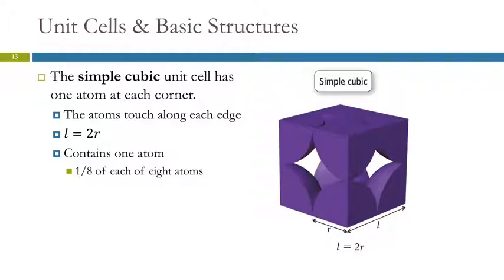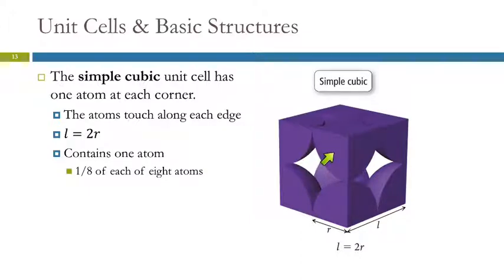The size of the unit cell depends on how big the atom is — a larger atom means a larger unit cell. The other thing we're interested in is how many atoms are in this unit cell. There are parts of 8 atoms, one at each corner. Each of those is 1/8 of an atom, and there are 8 of them, so the equivalent of one atom is in the unit cell.